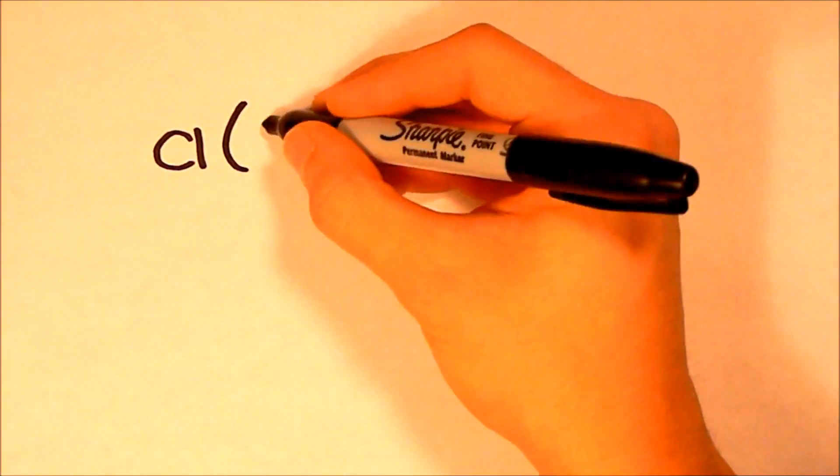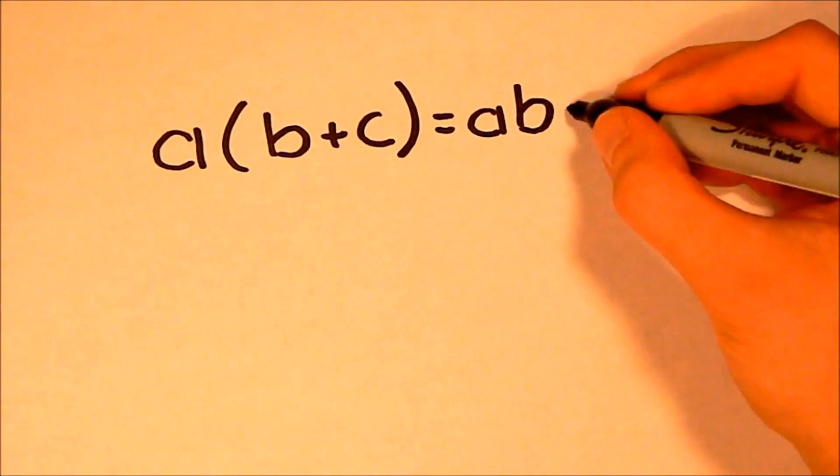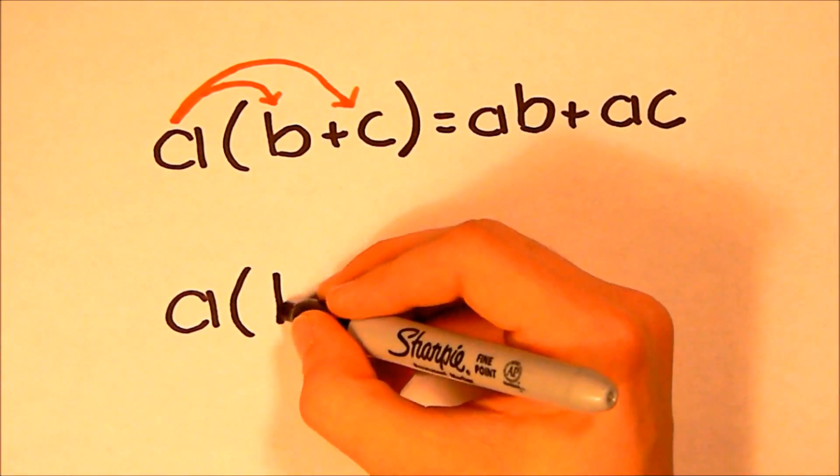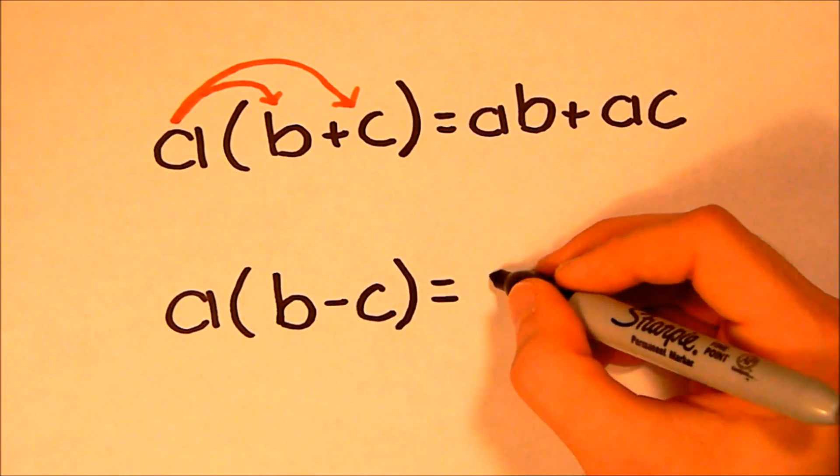In more algebraic terms, a times the quantity of b plus c equals ab plus ac. And, a times the quantity of b minus c equals ab minus ac.